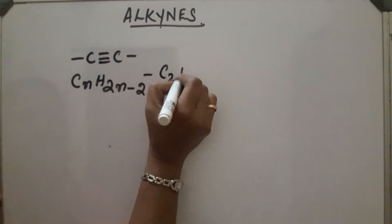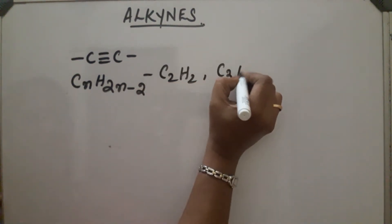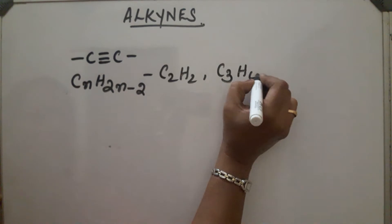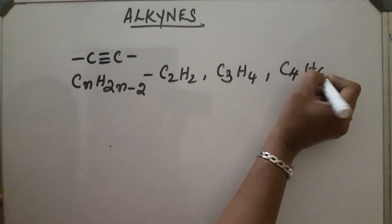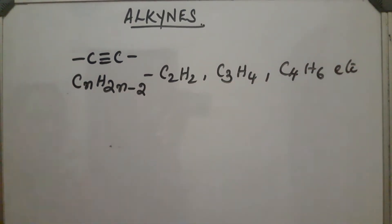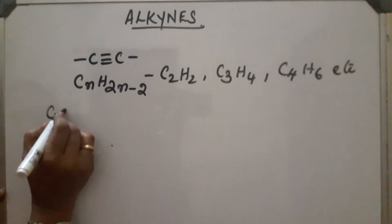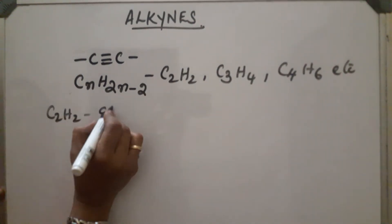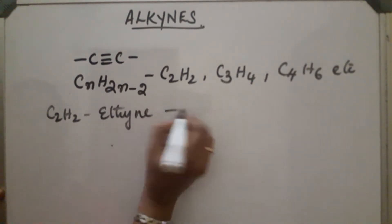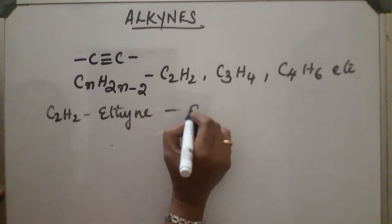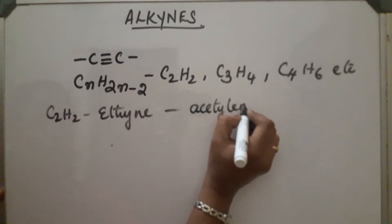The first member will be C₂H₂, then C₃H₄, next C₄H₆, and so on. The first member C₂H₂ is called ethyne. Its IUPAC name is ethyne and it can also be called by its common name, acetylene.